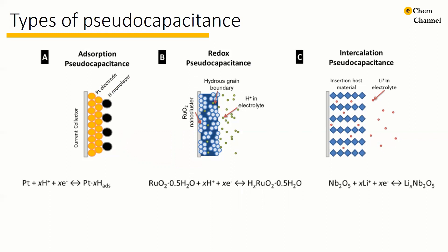Conway later extended the concept of pseudocapacitance to three types: monolayer adsorption or adsorption pseudocapacitance, faradaic reactions on the surface or surface redox, and solid-solution electrochemical intercalation or intercalation pseudocapacitance.